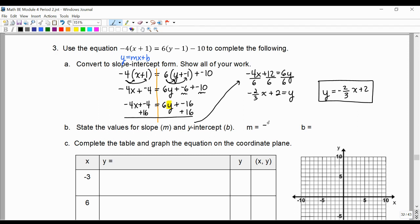And then we can say the slope is negative 2/3 without the x and b is 2 or (0, 2).